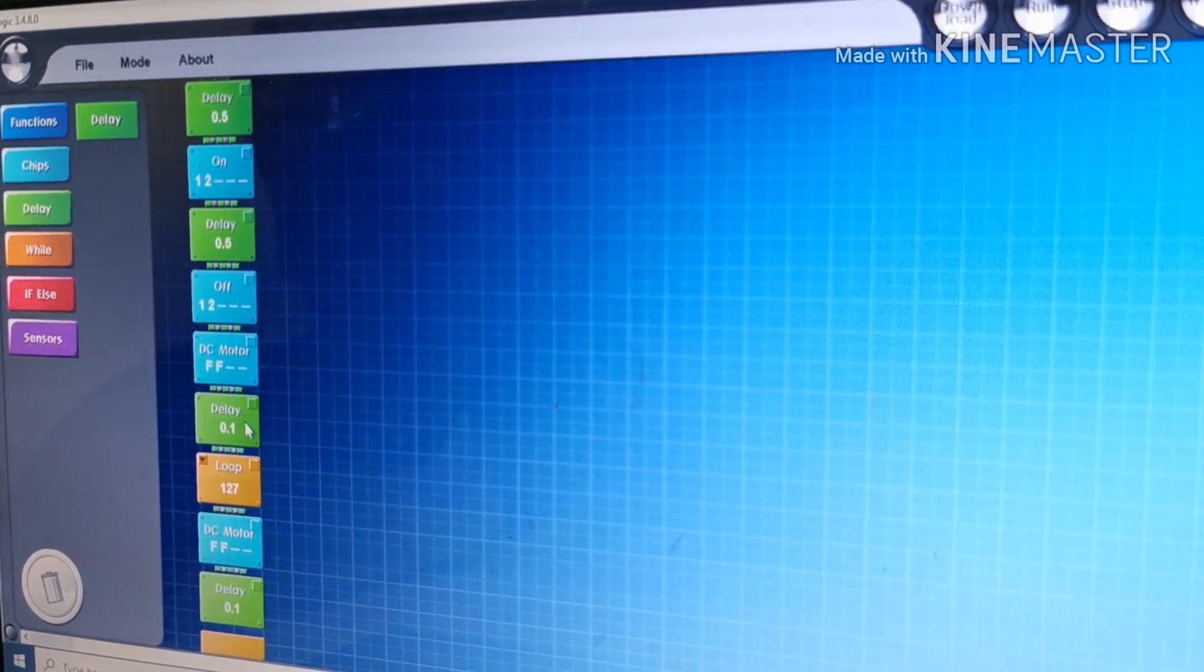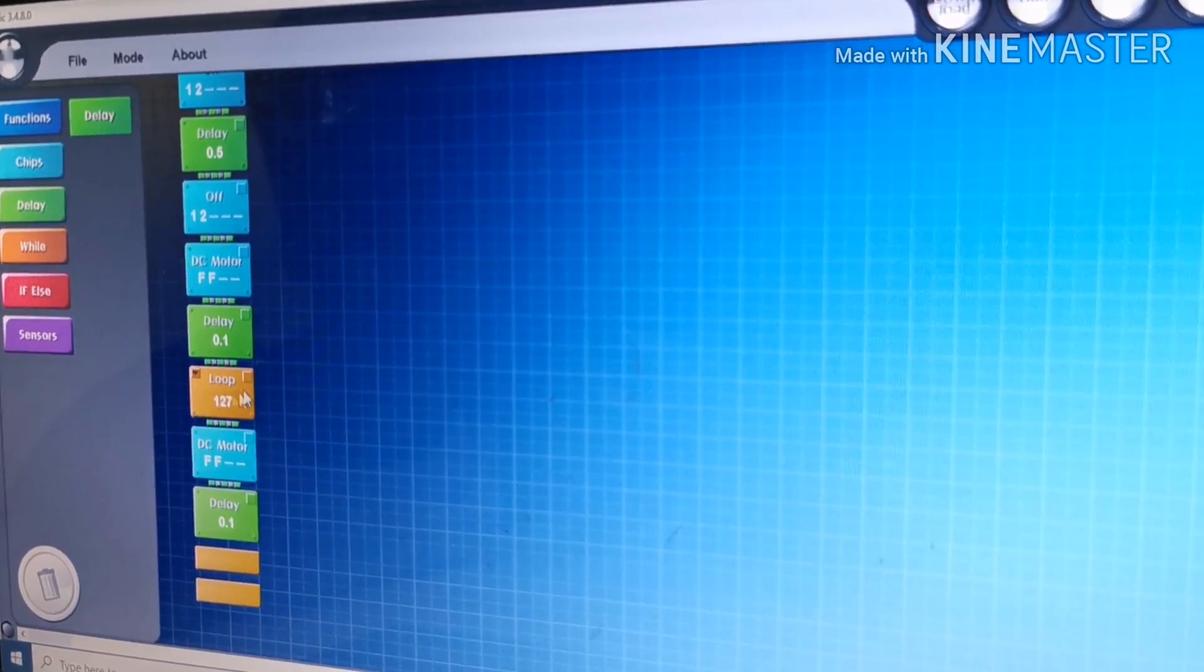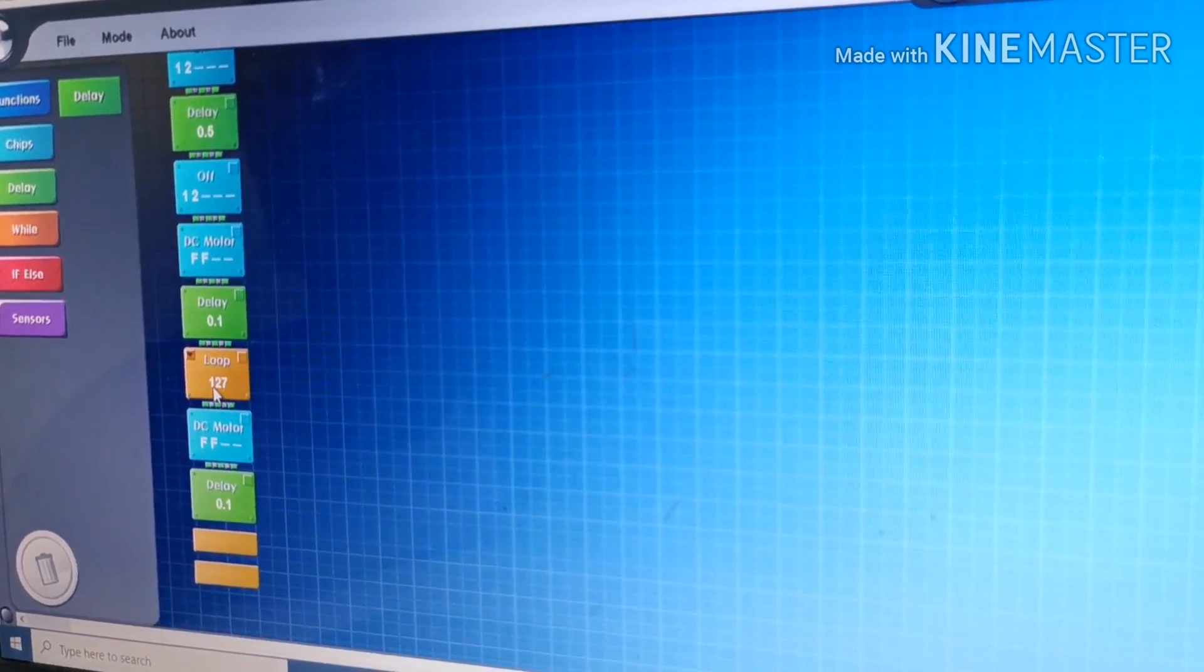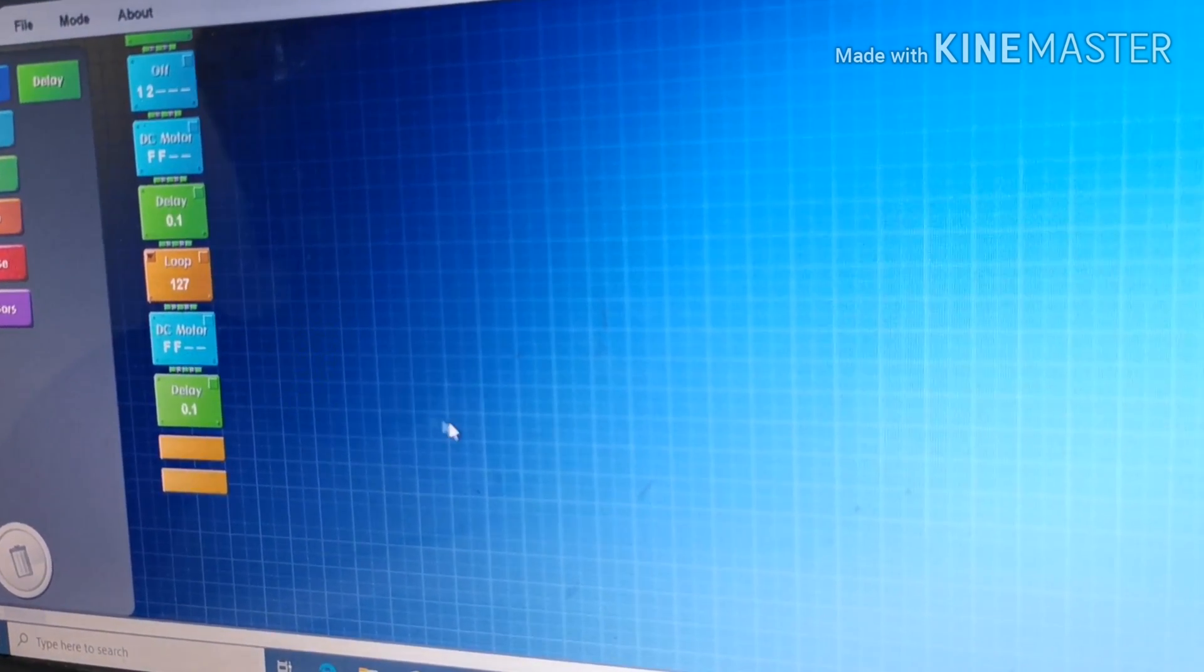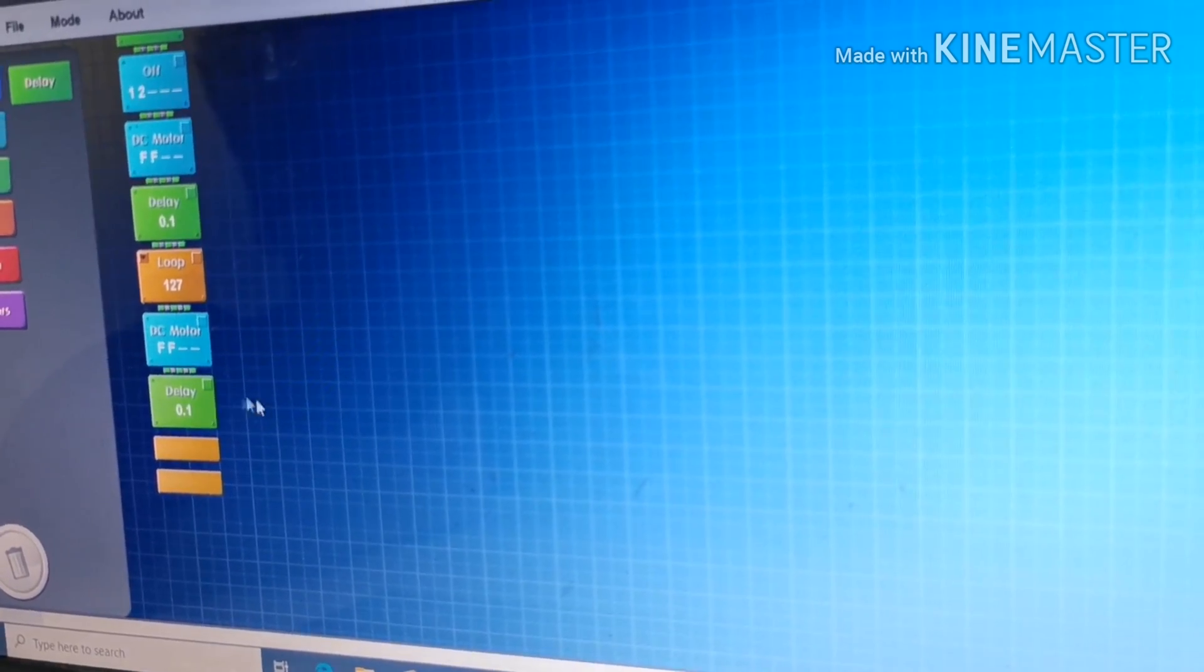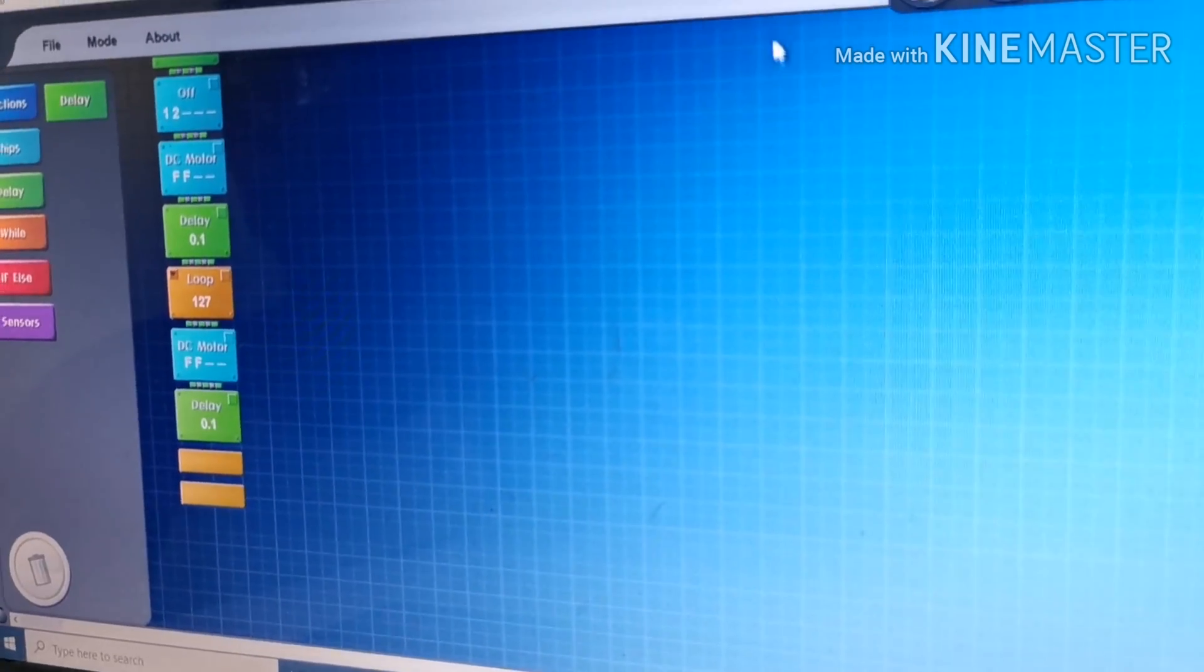Now I've kept this delay here. Then another loop. It will repeat it 127 times. Then DC motor again, FF means forward. And another delay. So let's download it.